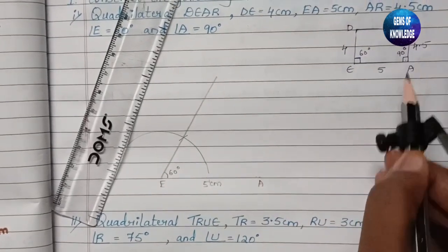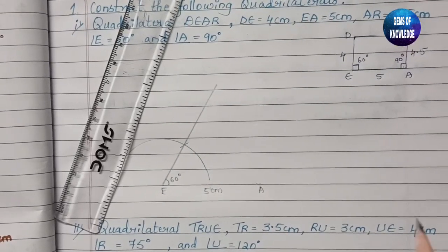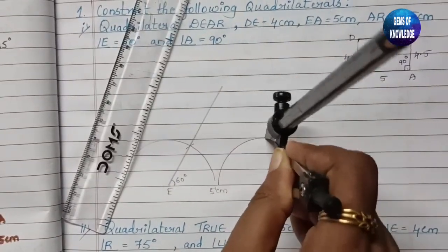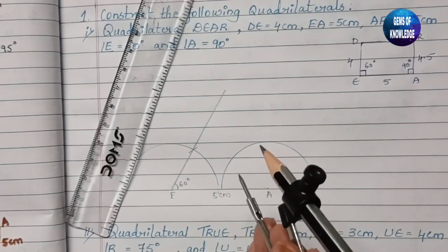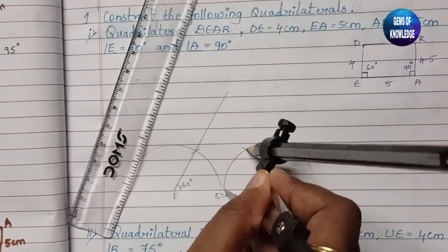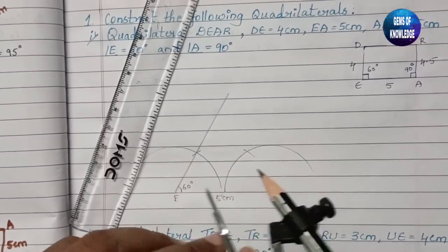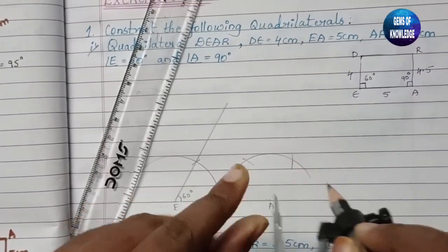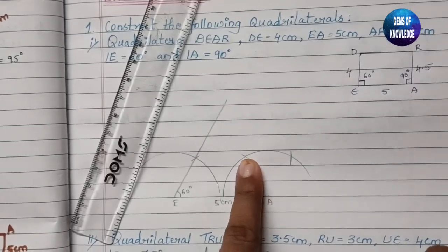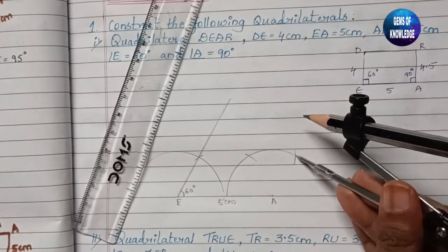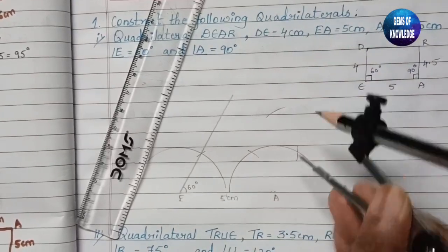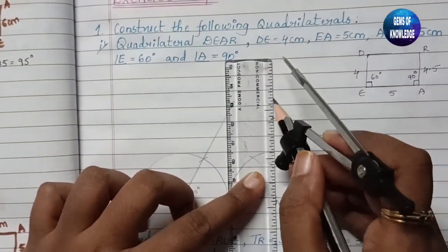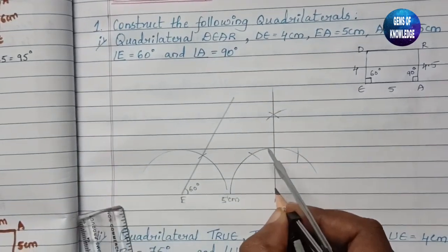Similarly, we need to draw 90° at point A. From A, cut an arc for 60°, then keeping the same measurement, cut another arc to get 120°. We know 90° lies between 60° and 120°. Keeping the compass on the 120° mark, draw an arc, then from the 60° mark draw another arc — the intersection gives us the 90° point.